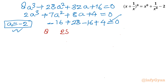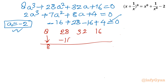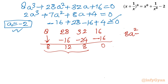Writing out all the coefficients of the cubic equation: 8, 28, 32, 16. With leading coefficient 8 and root minus 2, after synthetic division we get the resulting quadratic equation: 8A^2 + 12A + 8 equals 0.